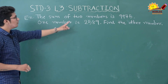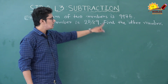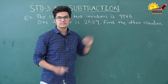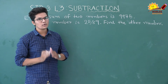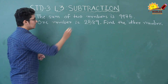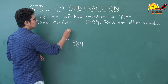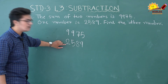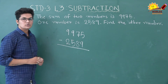Now let's solve a word problem. The sum of two numbers is 9975. One number is 2589. Find the other number. So we know the sum of two numbers is 9975 and one number is 2589. We need to find the other number. We will subtract 2589 from 9975 to find it.